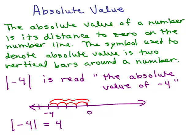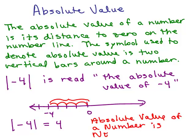So one thing you might note is absolute value cannot be negative. It can never be negative because we're talking about distance and it doesn't make sense to talk about a negative distance.